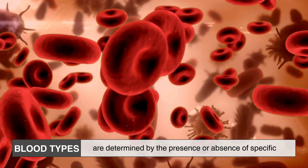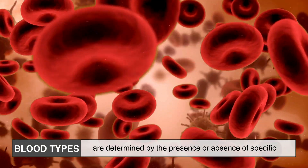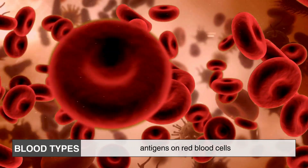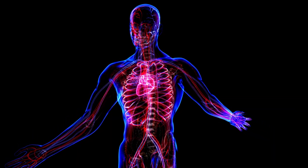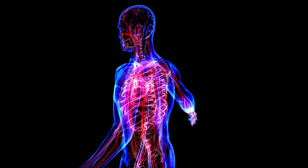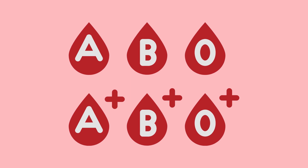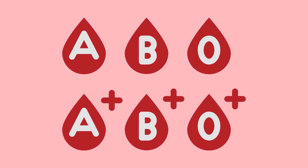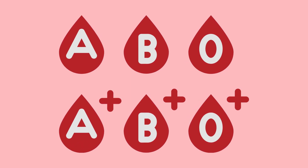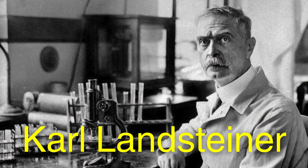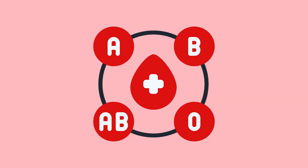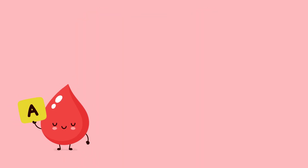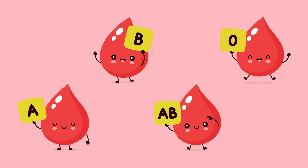Blood types are determined by the presence or absence of specific antigens on red blood cells. Antigens are molecules that the immune system recognizes. The most important classification system is the ABO blood group system, discovered by Karl Landsteiner in 1901. This system categorizes blood into four main types: A, B, AB, and O.